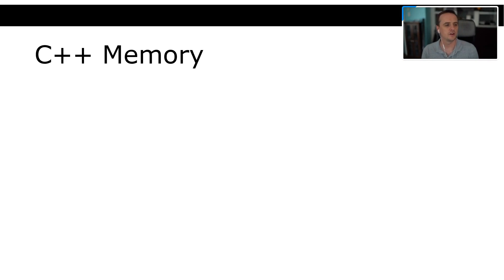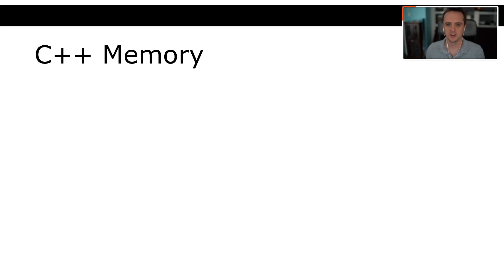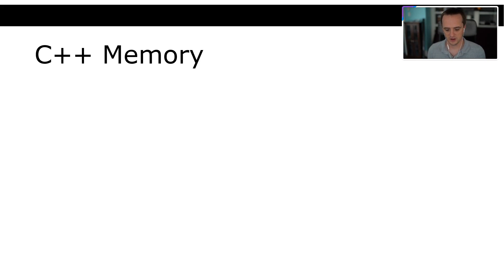So, C++. One of the biggest differences when you start using C or C++ coming from languages like Python or Java is how memory is handled. As we talked about last time, C++ is not a garbage-collected language, which means you can't just allocate memory all over the place and not care about it. Java and Python have garbage collection — they figure out whether you still have access to memory and deallocate it for you.